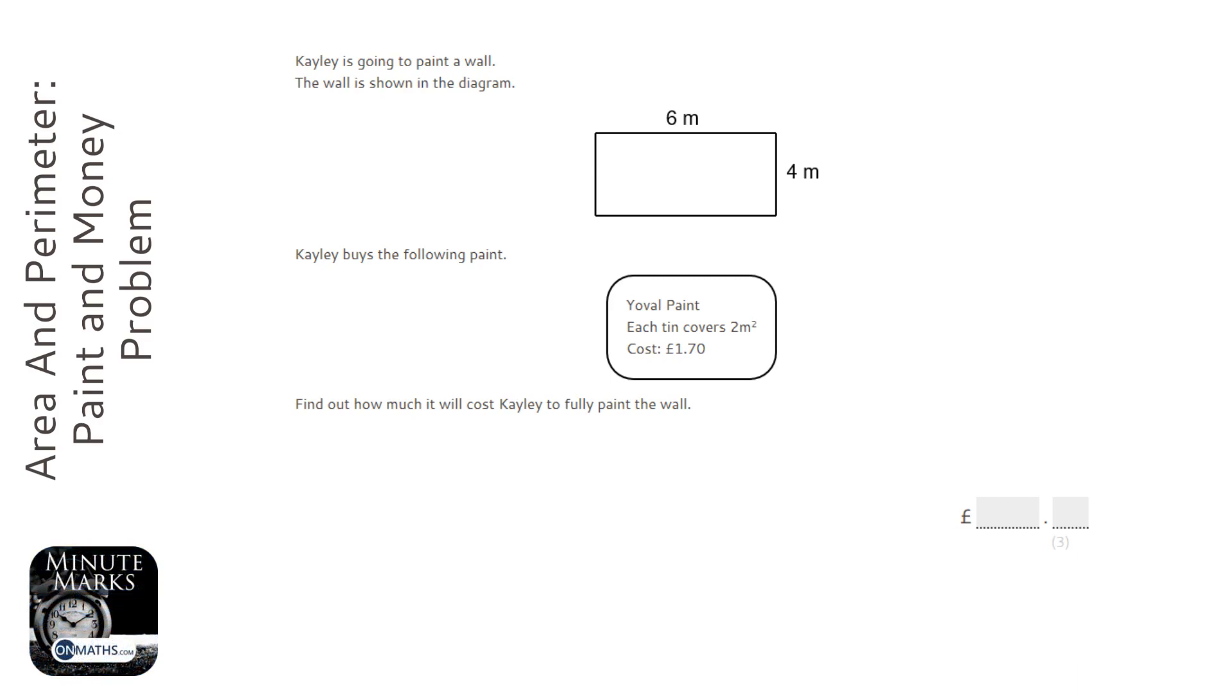It says how much will it cost Cayley to fully paint the wall. So the first thing we've got to work out is the area of the wall, and the area will be 6 times 4, so base times height, which is 24 metres squared.